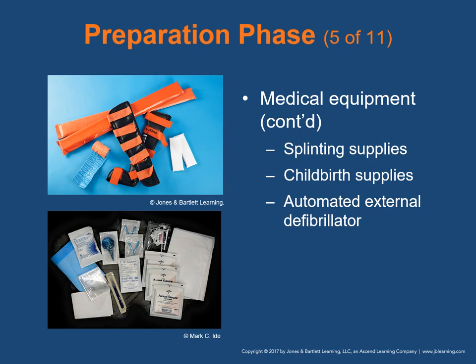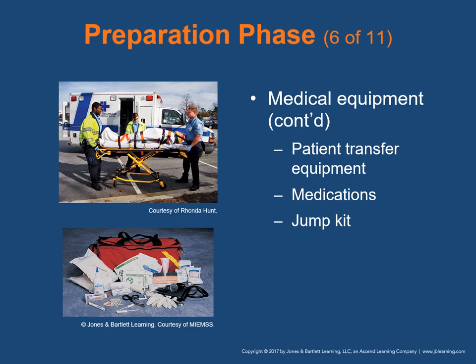Semi-automated and manual defibrillators with automated external defibrillation capacity are also available — make sure you're aware of your local protocols and medical director directives. With patient transfer equipment, you need a primary wheeled ambulance stretcher that fastens securely to the floor or side of the ambulance during transport, with at least three restraining devices for the patient. Other devices include a scoop stretcher, portable folding stretcher, flexible stretcher, basket stretcher, wheeled stair chair, long backboard, and short backboard or short immobilization device such as a KED.